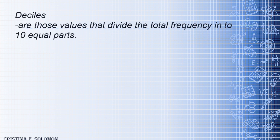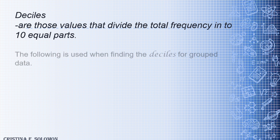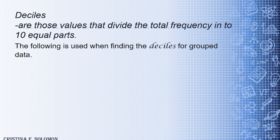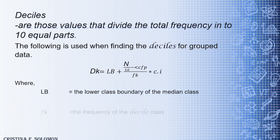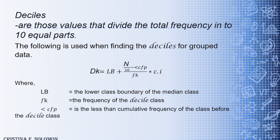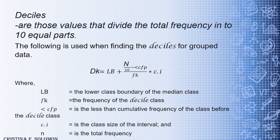Next is deciles. Deciles are those values that divide the total frequency into 10 equal parts. The word deciles came from 'deca,' which means 10. The formula for deciles is: DK = LB + ((KN/10 − less than CFP) / FK) × CI. The variables are the same: LB is the lower class boundary, FK is the frequency, less than CFP is the less than cumulative frequency, CI is the class interval, and N is the total frequency.